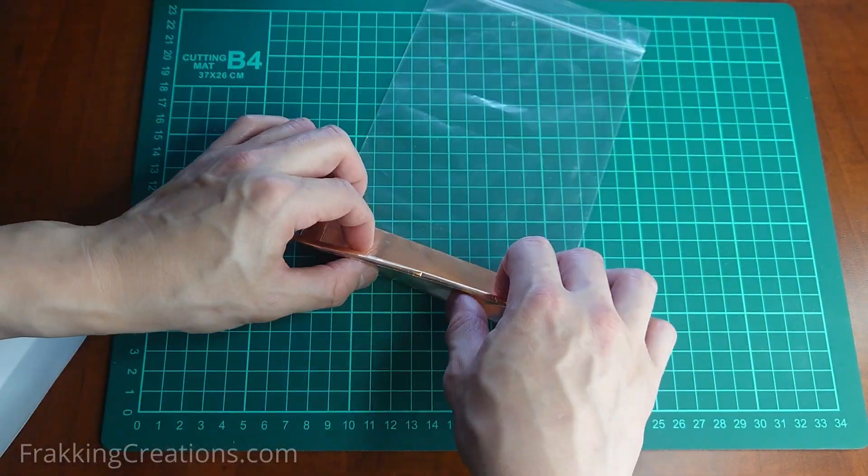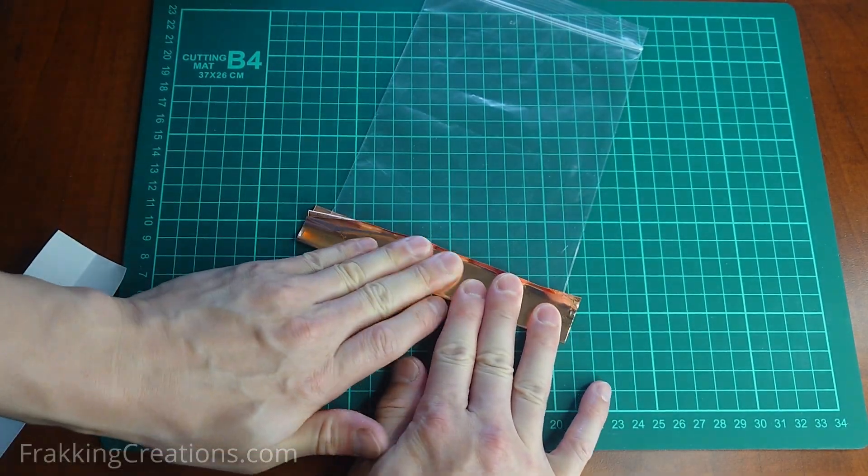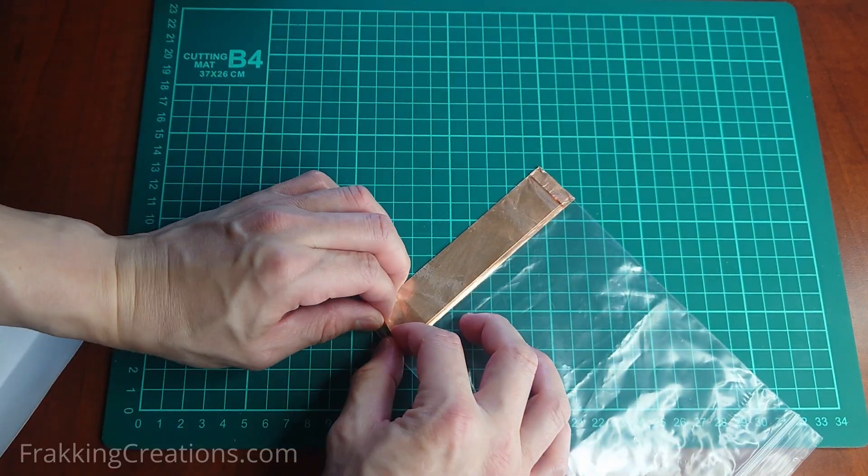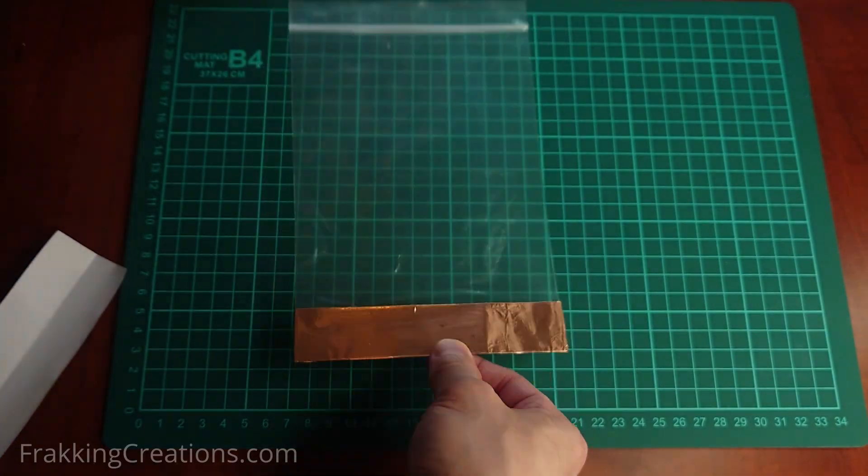Since the edges will wear faster as the bag is used, I am reinforcing it with more layers here. For the bottom layer, it should extend past both sides of the bag. Then the overhang is folded back to line it up with the bag.